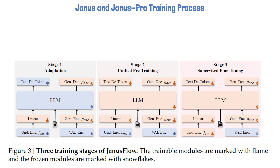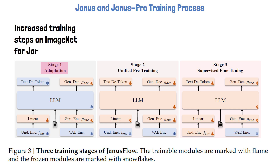The purpose of the first stage is adaptation of the new modules to work properly with the pre-trained components. To do that, the weights of the LLM and the image encoders are frozen, and only the newly introduced components are trained. These components are the ones that map the encoded images to the LLM input space and the image generation head. This stage trains the model on ImageNet to generate images based on image category. The training steps on ImageNet are increased for Janus Pro in this stage.